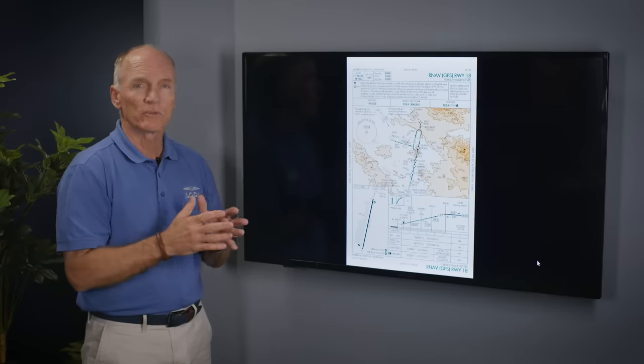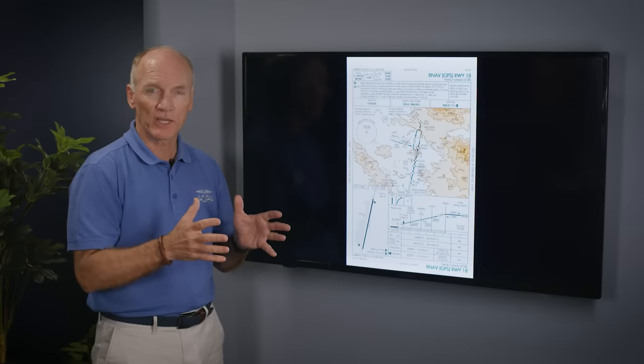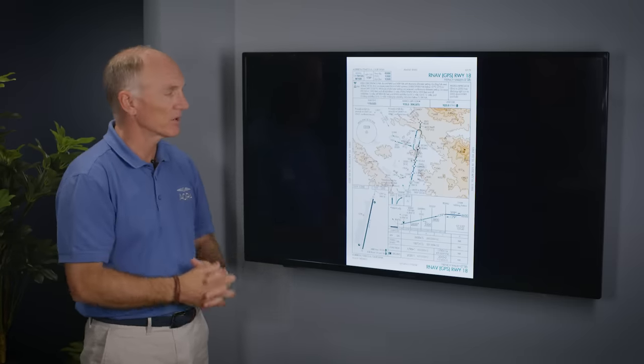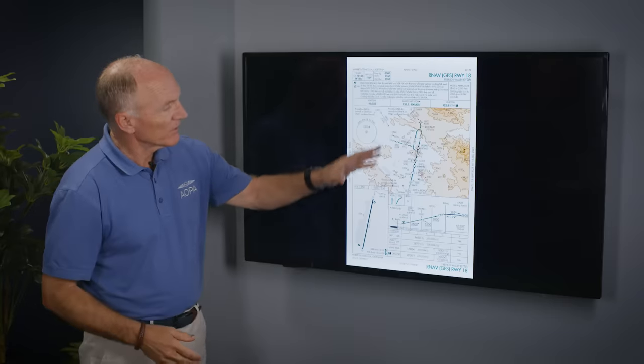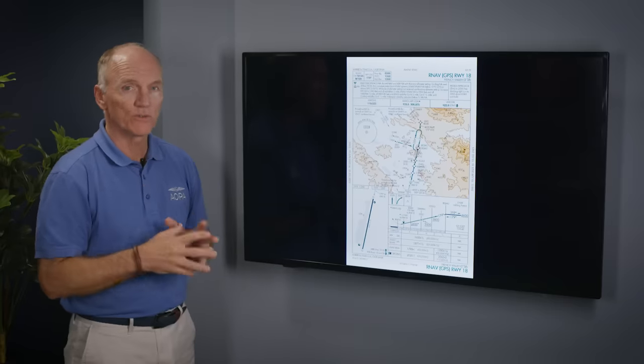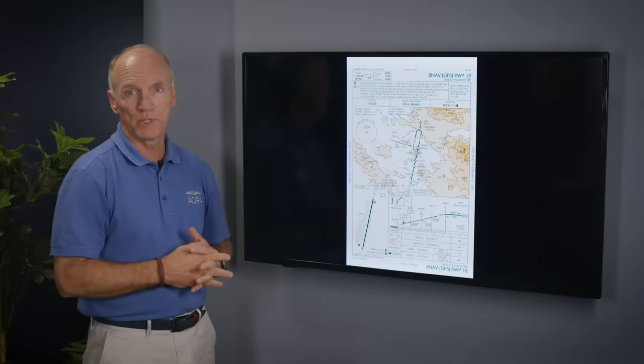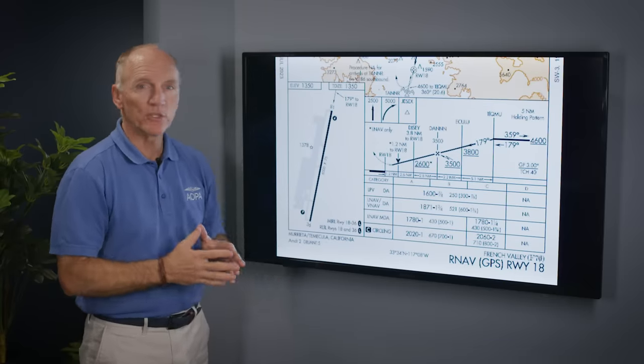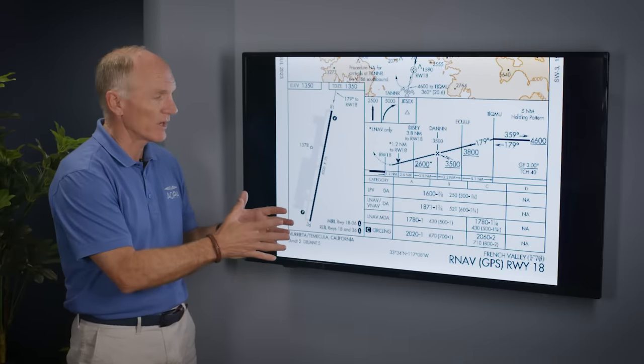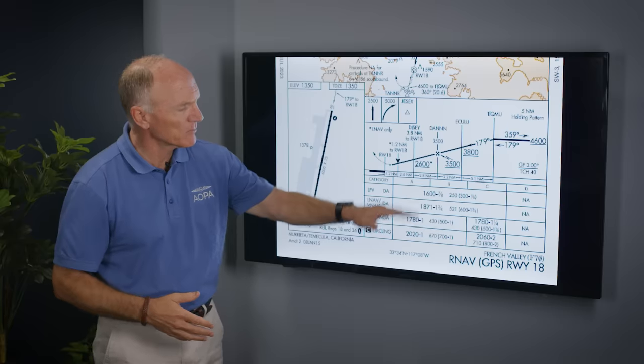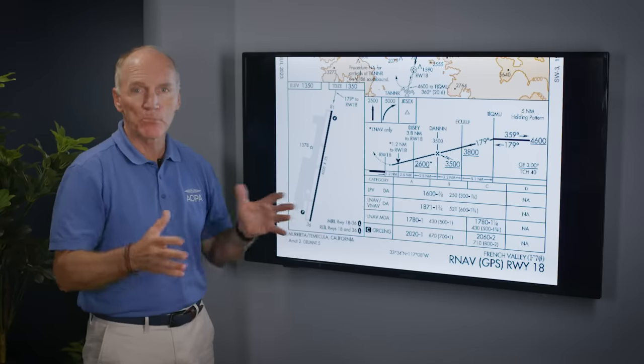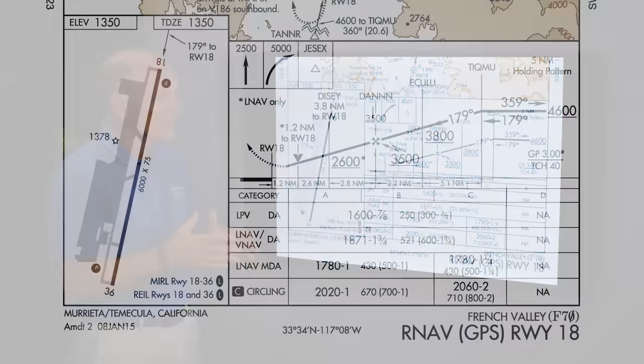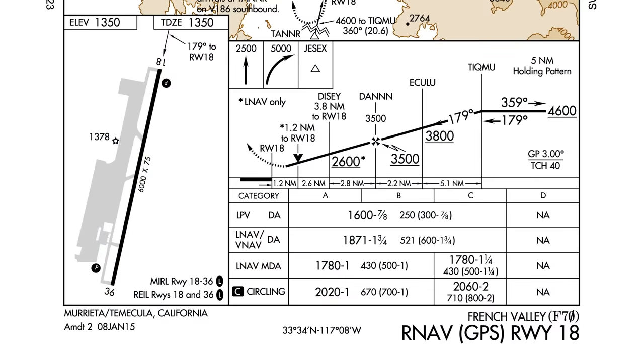One of the questions here is why did the pilot make the second attempt. If we take a look at the approach, there's one approach into French Valley, the RNAV GPS to runway 18, and it has different minimums based on the equipment on board the aircraft. Those minimums can vary by as much as 300 feet and a mile or so in visibility. The very least he needed was 300 feet and seven-eighths vis.